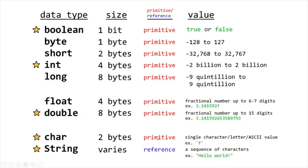There are eight primitive data types and a special reference data type called a string. Our first data type is boolean — it has a size of one bit, so it can only hold two values: true or false. If we're assigning a boolean value, we type either equals true or equals false. For example, in a light switch program, if the switch is on, the variable has a value of true; if it's off, false. That's why it only uses one bit of memory.